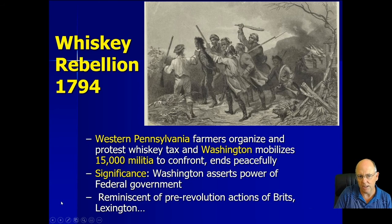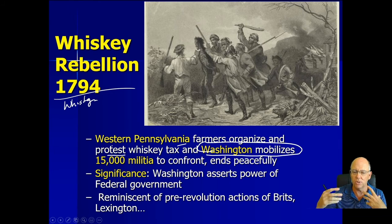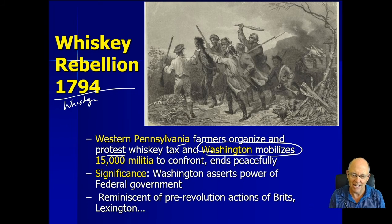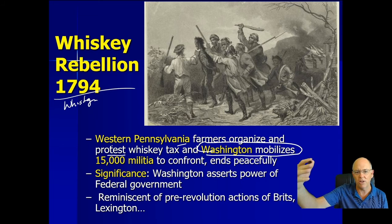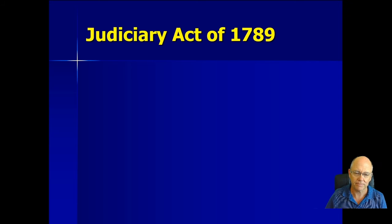The Whiskey Rebellion: because of Hamilton's financial plan and the whiskey tax, farmers protest against the tax. Washington goes to confront them — he puts on his uniform and marches out. He says you cannot rebel against the government; if you want to change it, you have to vote. He asserts the power of the federal government, making clear there will be no continuous Shays' Rebellions or Whiskey Rebellions — you're going to be loyal to the government of the United States.